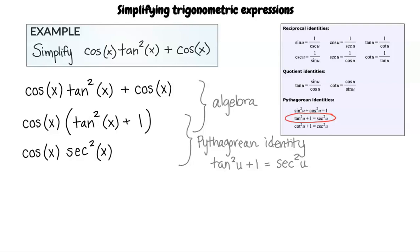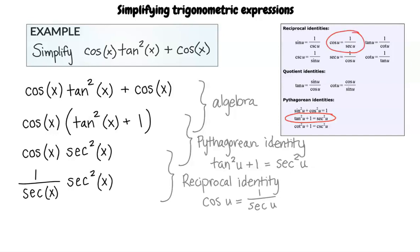Okay, so now we can substitute 1 over secant of x for cosine of x. Exactly. Last, we can cancel out one of the secant of x terms from the numerator with the secant of x terms in the denominator and write our answer as secant of x.